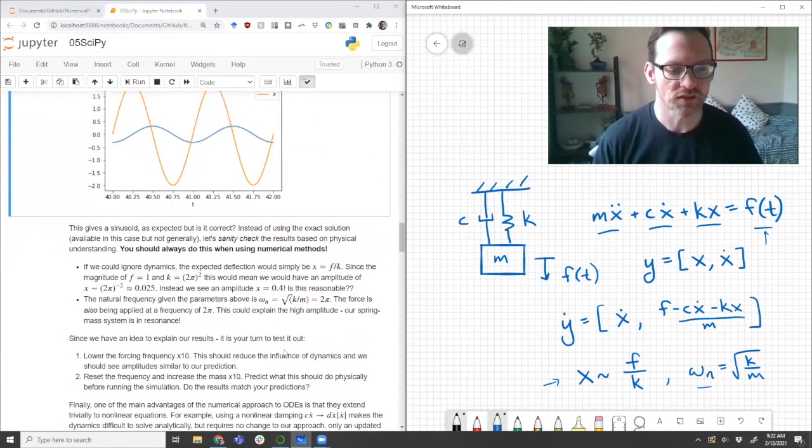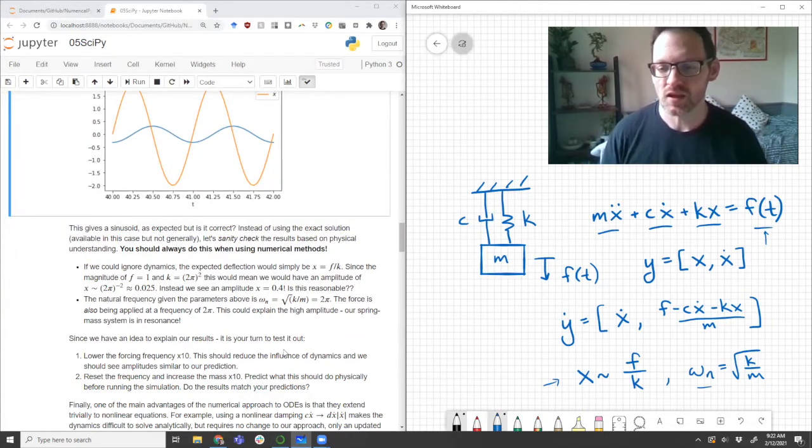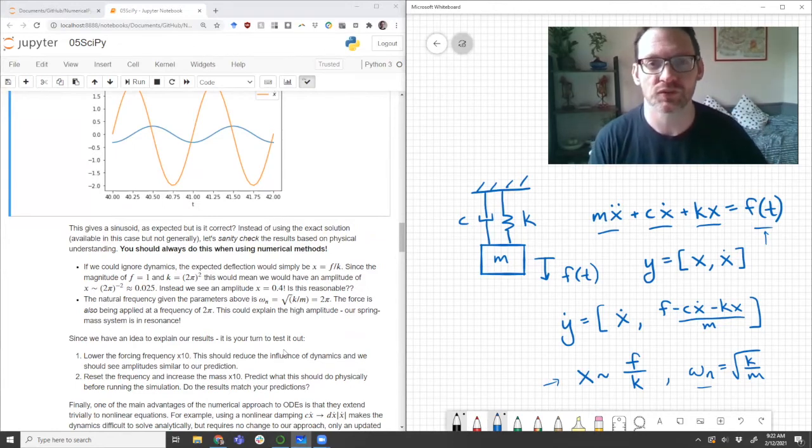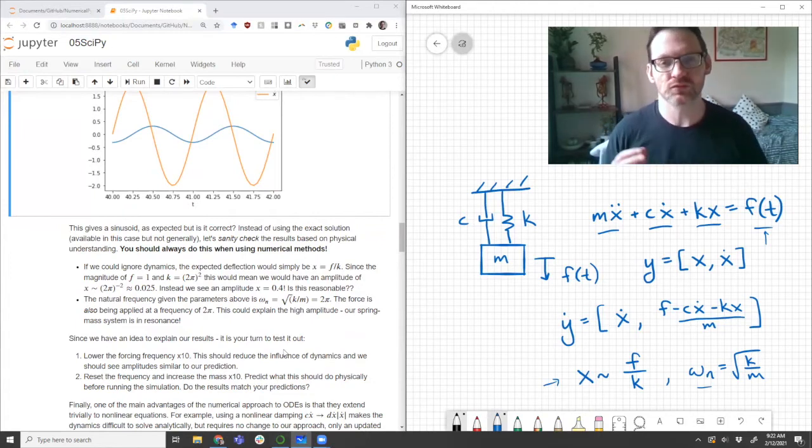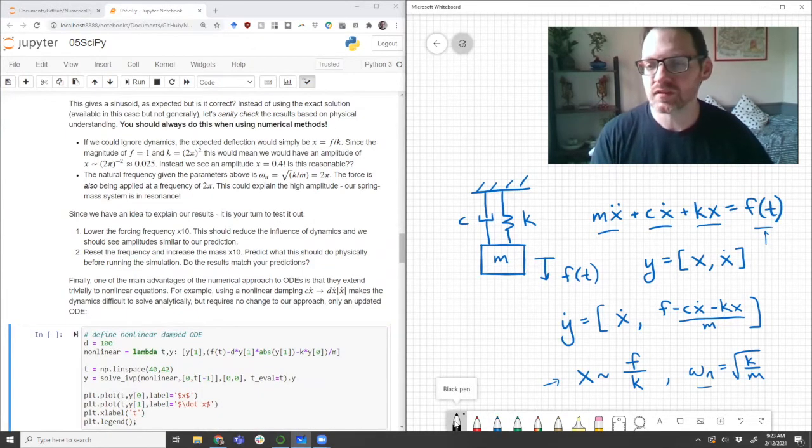From an engineering point of view, you should always be looking for these ways of checking your results. In this case, what's happened is we've set the natural frequency of the oscillator to match the forcing frequency. And so we're at resonance. So this simple statics approach isn't going to be a good estimate. And we can test that out now. We have this ability to change the parameters in this equation. So as your first exercise, I want you to lower the forcing frequency by a factor of 10. That should take you out of resonance and you should see an amplitude of around 0.025. The next thing I want you to do is reset the frequency and change the mass. Increase it by a factor of 10. And I want you to predict what should you get out of that situation and then run the simulation and see if you were right.